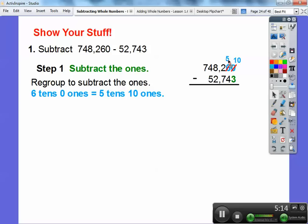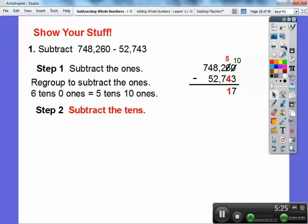I stole a ten from this 6 and put it over here with this 0. So now it becomes 10 minus 3. Now I can do 10 minus 3 is 7, and then I'm going to subtract the tens. 5 minus 4 is 1.